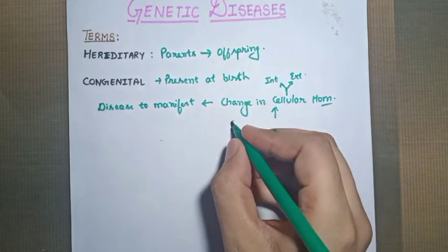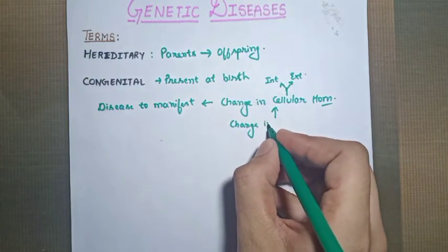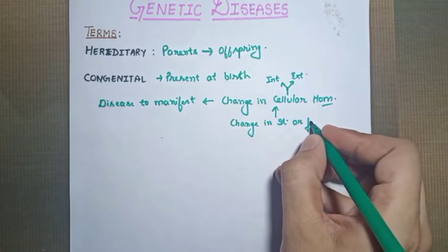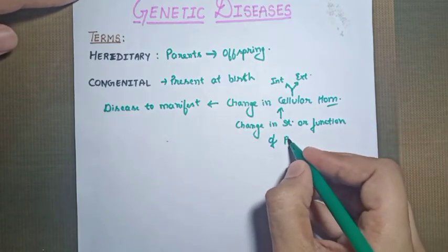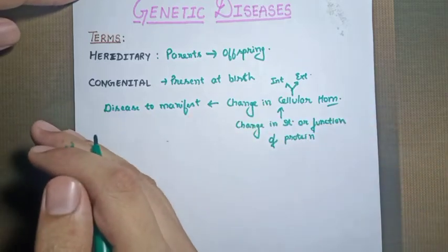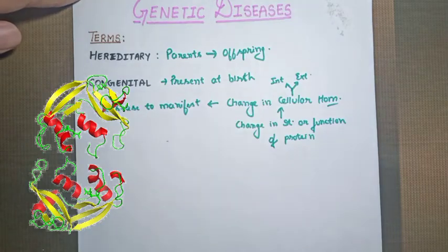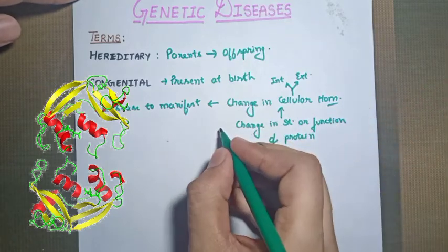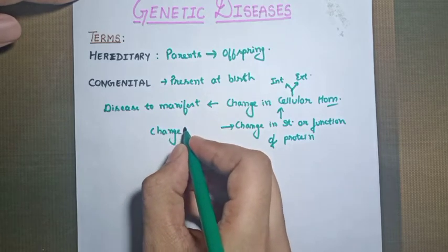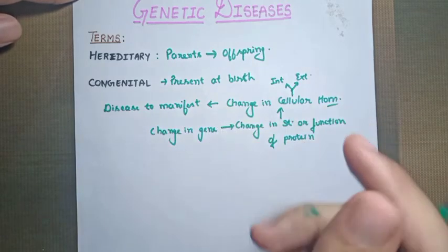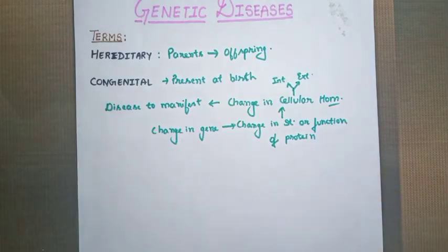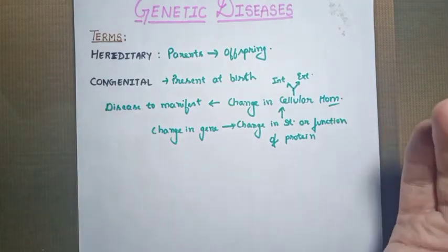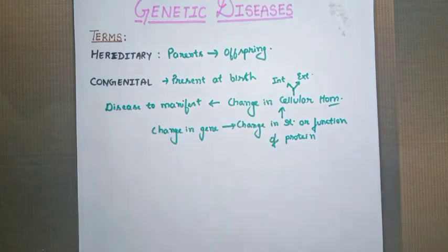When cellular homeostasis is disturbed, it may be due to a change in the structure or function of proteins. Change in the structure or function of proteins can lead to a disease manifesting. We now know that for a disease to manifest, a change in cellular homeostasis is responsible, and that requires a change in the structure or function of a protein. This change in protein structure or function develops due to changes or defects in genes.